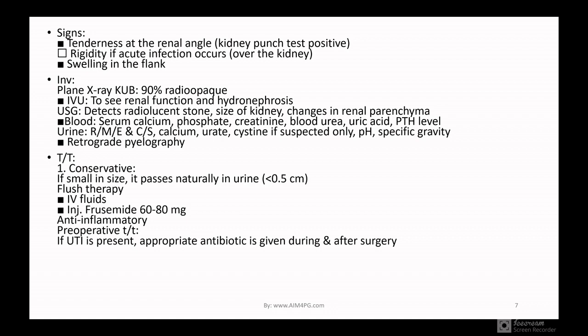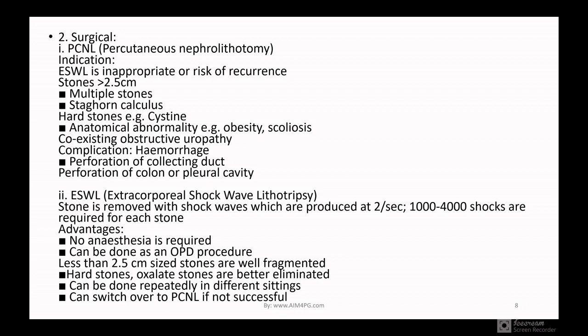The first surgical treatment is PCNL — Percutaneous Nephrolithotomy. Indications for PCNL are: when ESWL (extracorporeal shock wave lithotripsy) is inappropriate or risk of recurrence is high; stone is more than 2.5 cm; multiple stones; hard stones like cystine; anatomical abnormality of the kidney; patient obesity or scoliosis; and coexisting obstructive uropathy. Complications of PCNL include hemorrhage and perforation of the collecting system, colon, or pleural cavity.